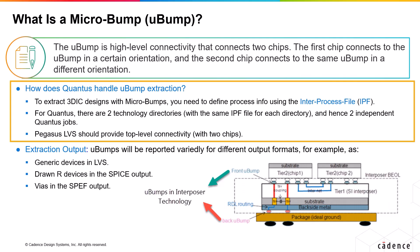How does Quantus handle the micro bump for extraction? To extract 3D IC designs with micro bumps, you need to define the process info using a file called the IPF file. IPF stands for Inter Process File. One IPF file is enough for all the vertically connected chips. IPF is a separate file that uses the ICT syntax extension to define the micro bump process information.